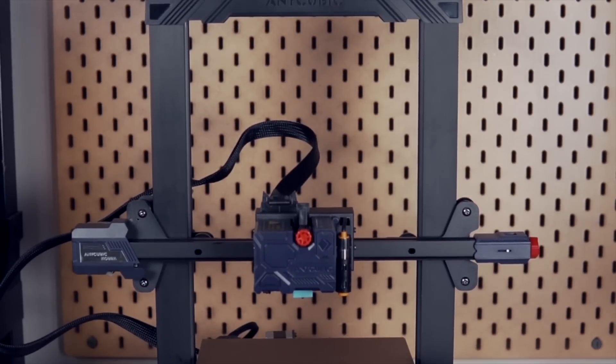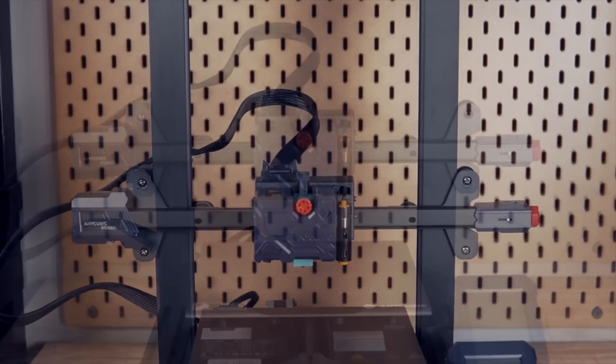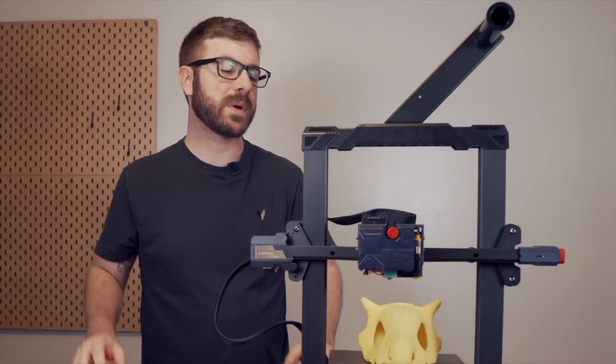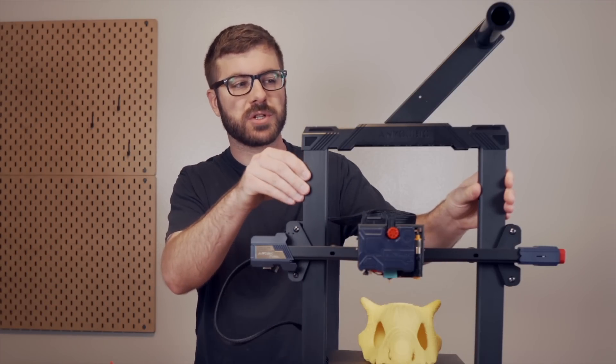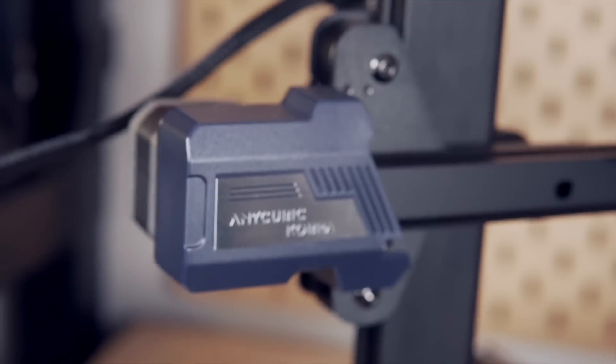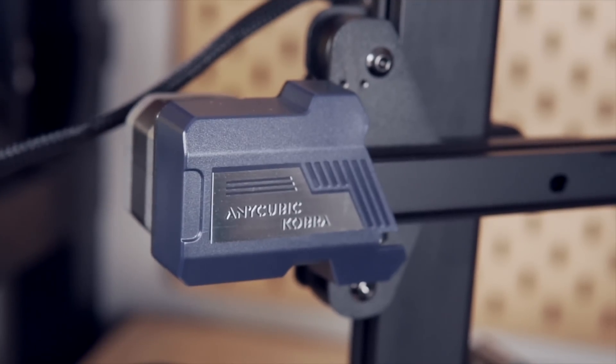The Cobra has a slightly smaller build volume than the Viper at 250 by 220 by 220 millimeters. The printer's frame is primarily constructed of aluminum extrusions, but the top bar as well as all of the blue and red parts are made out of injection molded plastic.